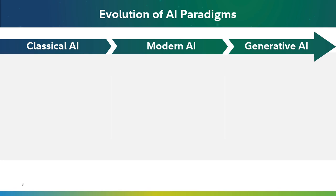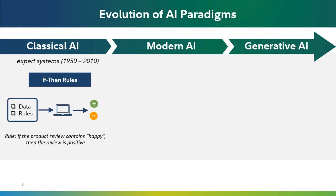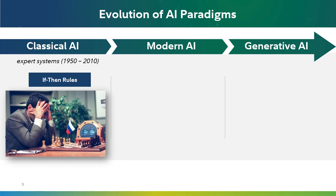Let's use a simple example such as deciding whether a product review is positive or negative. How would these different paradigms solve the classification of product reviews? In classical AI, we would write down specific rules to decide the outcome, like if-then rules. In our example, we can say: if the review includes the word 'happy,' then the label is positive. One example of the shining moment of this type of AI is IBM's Deep Blue playing chess against world grandmaster Kasparov. However, this type of AI can run into issues because there's a limit on how many rules we can specify and what we can express as a rule. Also, it's not general purpose — we cannot use it in another task.